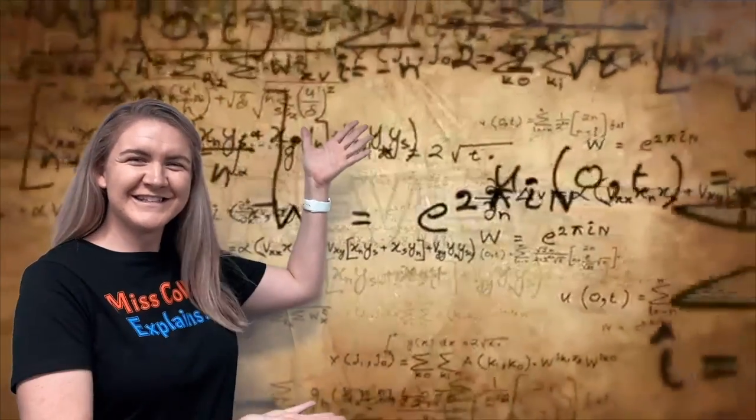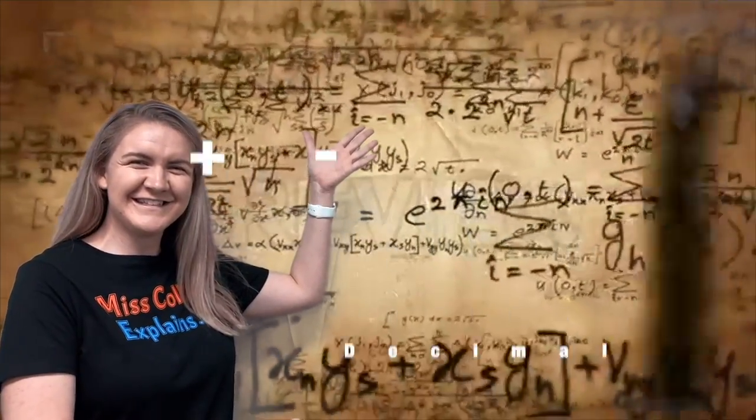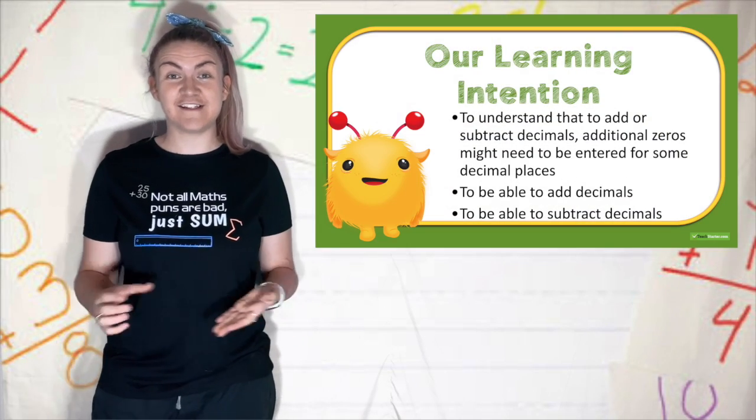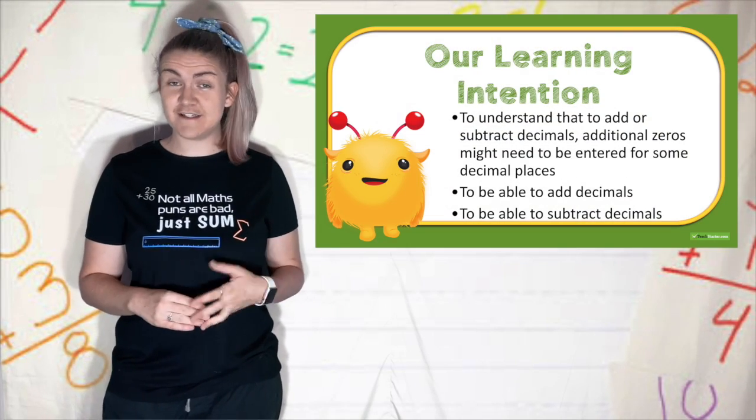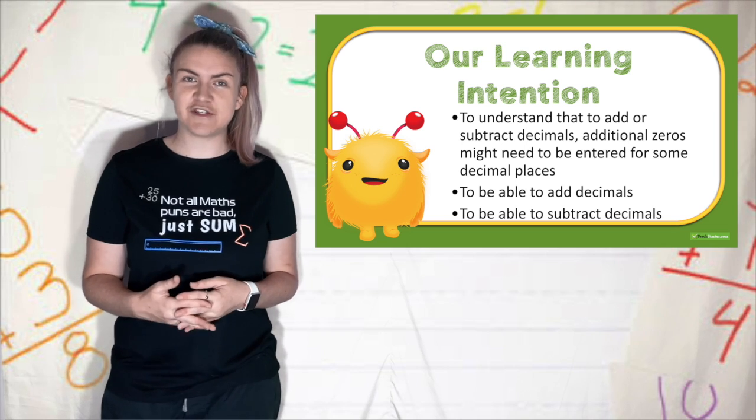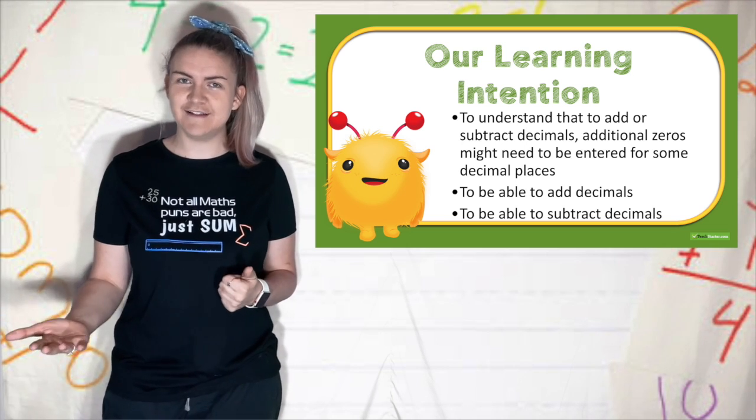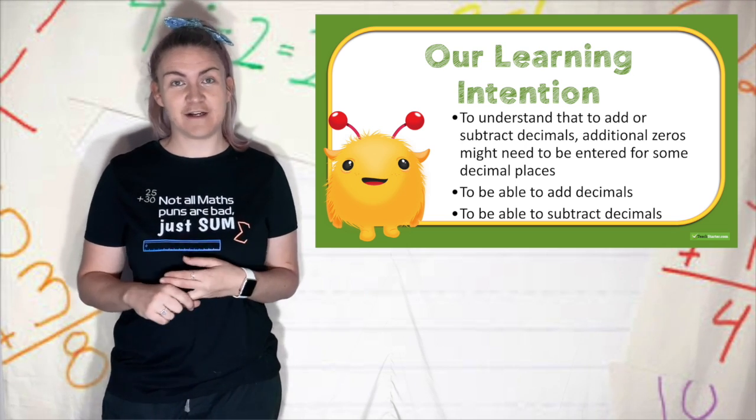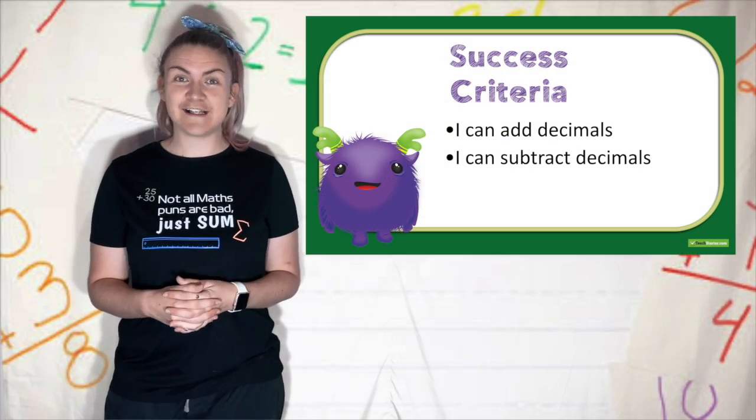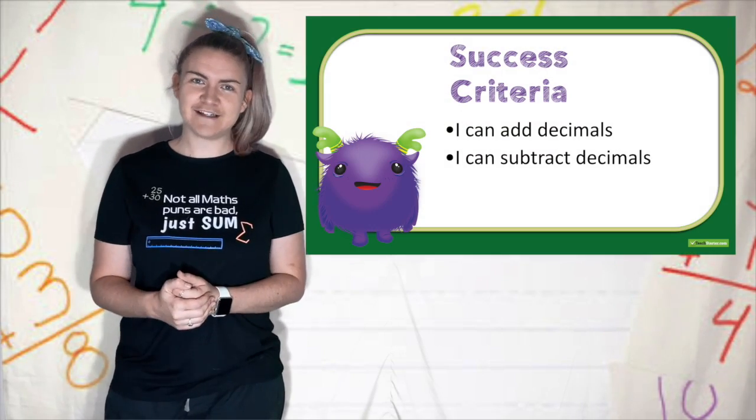Miss Collier explains adding and subtracting decimals. Today our learning intentions are to understand that when we add and subtract decimals we might need to include some additional zeros after the decimal place and to be able to add and subtract decimals. We will know we are successful when we can add and subtract decimals.